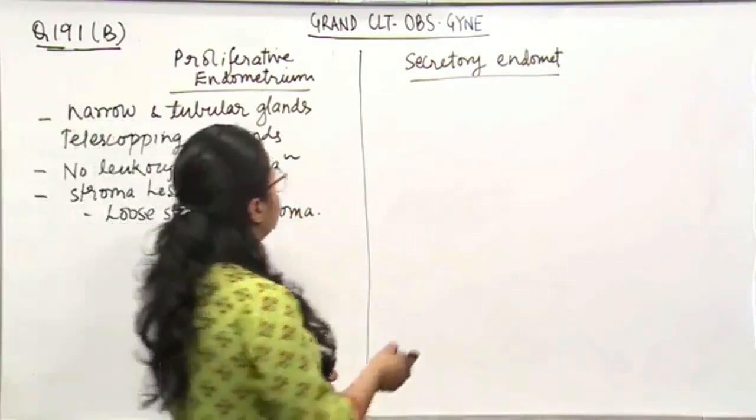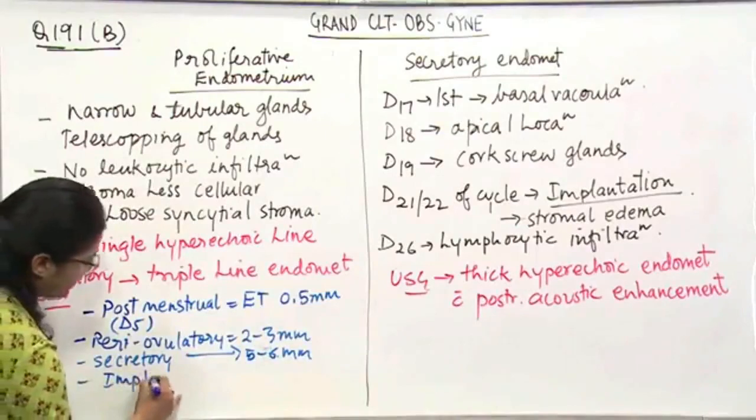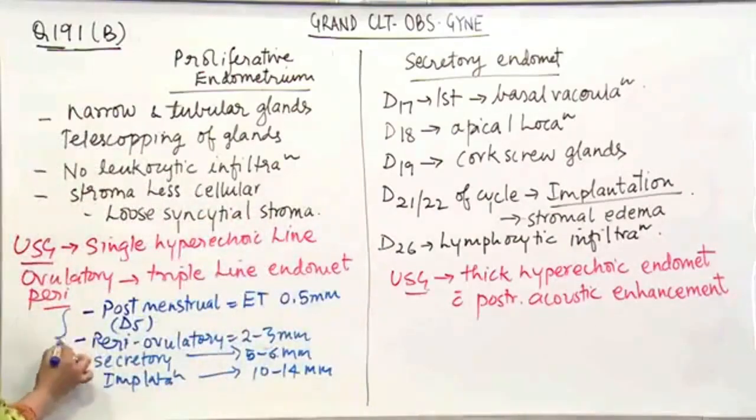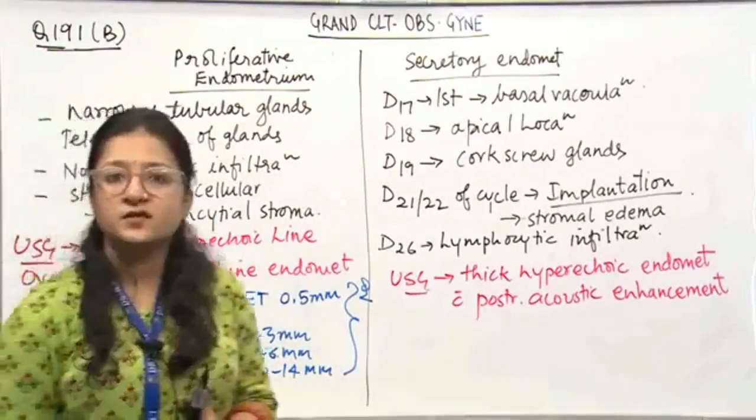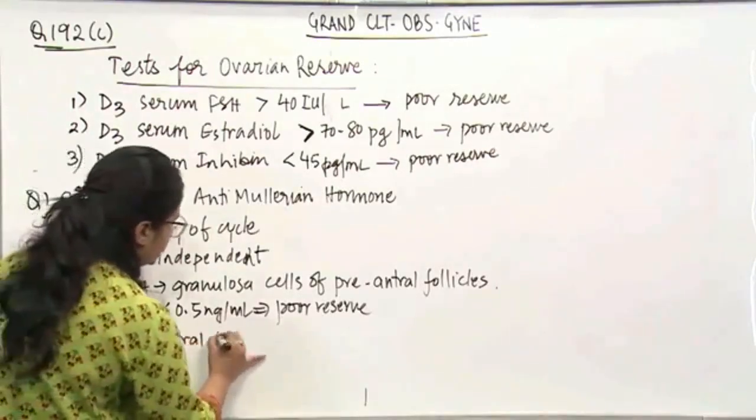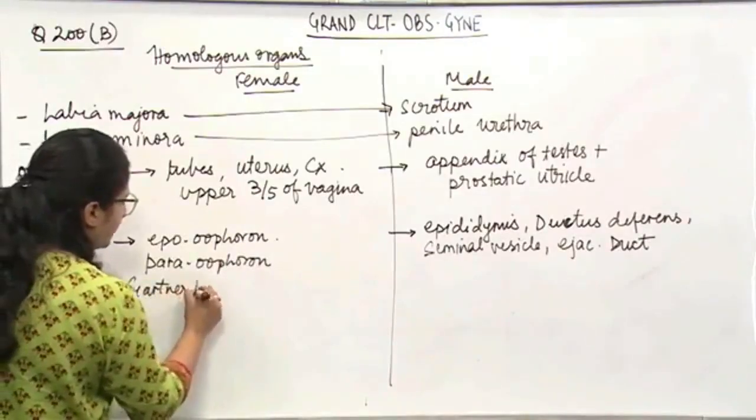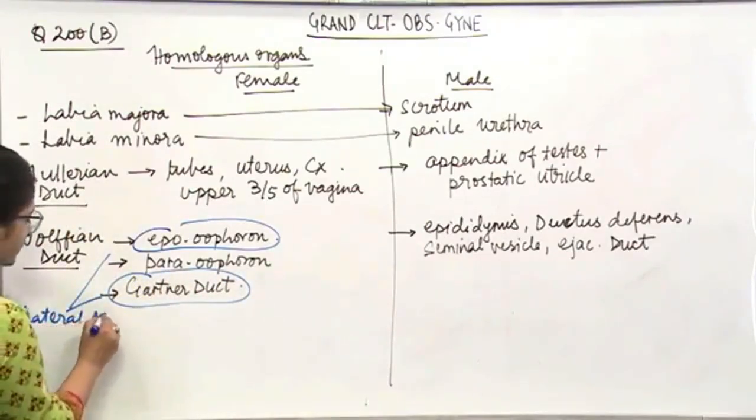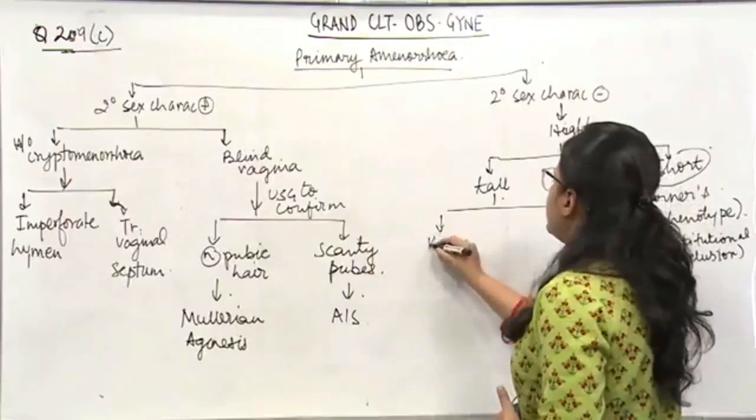On the other hand, in secretory endometrium, the first change that comes is on day 7 and during the time of implantation, the endometrial thickness is 10 to 14 mm. So there should be no confusion regarding the thickness of the endometriums in various phases of the menstrual cycle. And reserve is anteral follicular count, day 3 anteral follicular count and the Gartner's duct. Gartner's duct, they are on the lateral aspect of broad ligament.